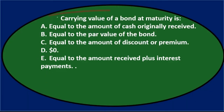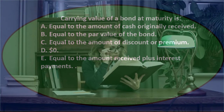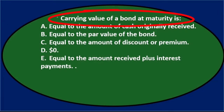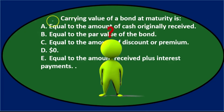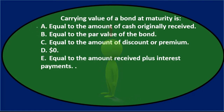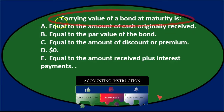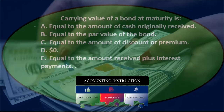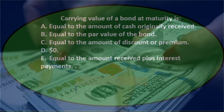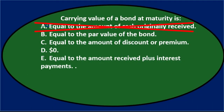We'll go through the process of elimination. If you know the definition of carrying value, try to identify the correct answer first; if not, we can work through the options. Option A says equal to the amount of cash originally received — it doesn't seem right for the carrying amount to equal the cash received, so A is not it.